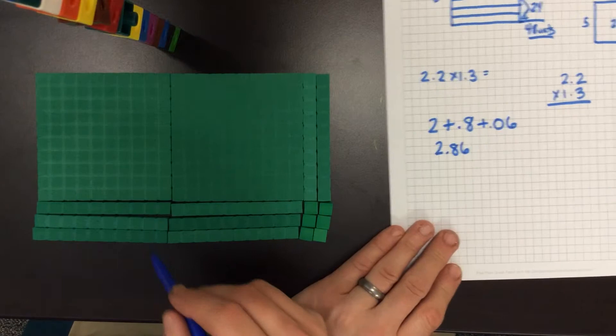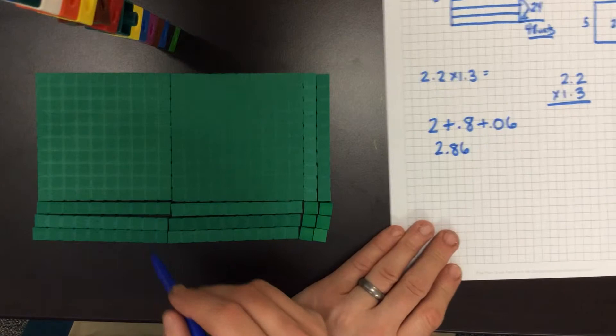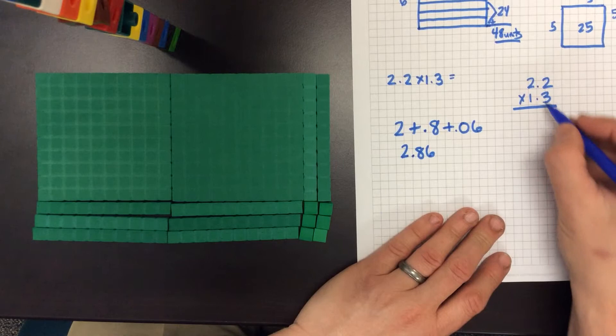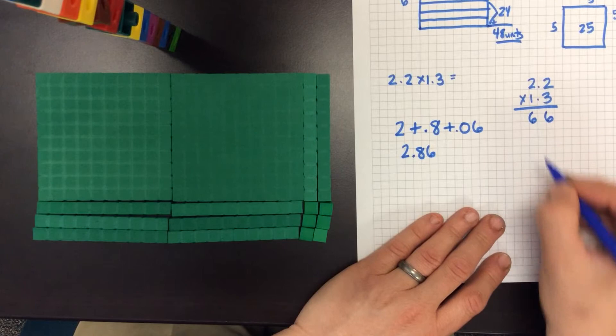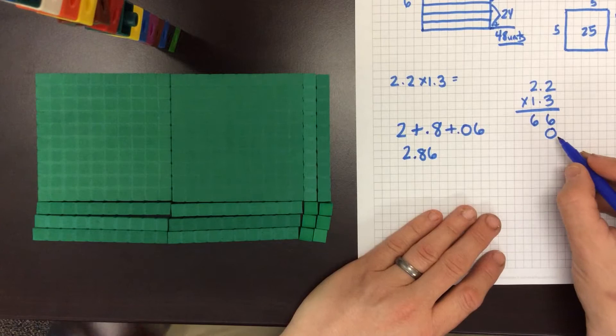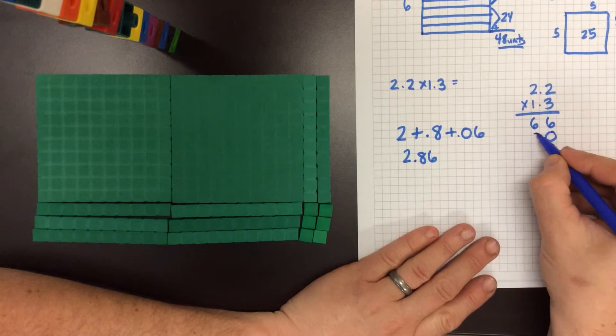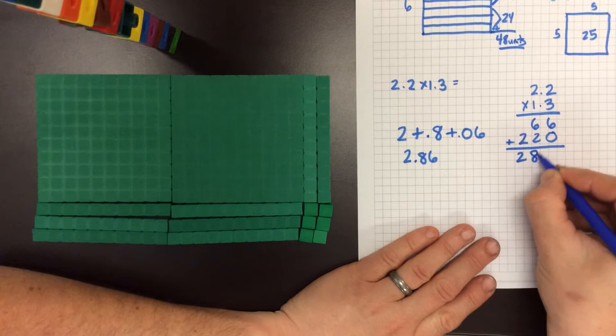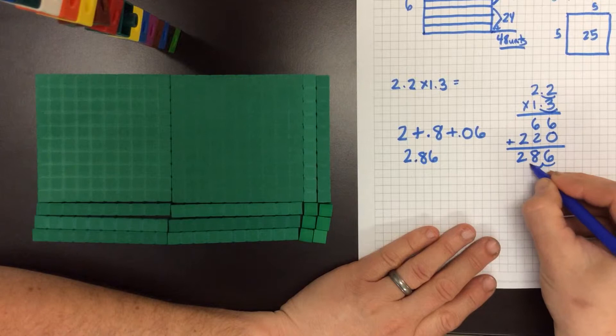Now if I want to do the algorithm I'm going to see if that answer is exactly the same. So we're going to multiply 2 times 3, multiply another 2 times 3 which is 6. We have to put our whole place value holder underneath the 6 because we are now multiplying in the ones place value. 1 times 2 is 2, 1 times 2 is 2. When I add them up I get 286. But because I'm multiplying in the tenths twice I have to move my decimal place over two places to get 2.86.